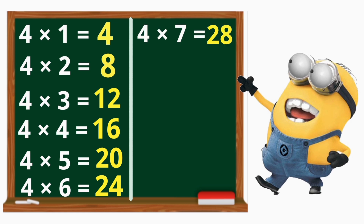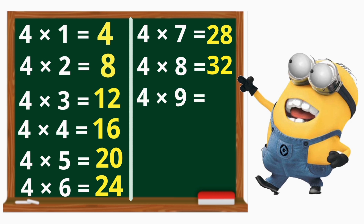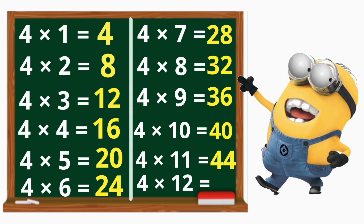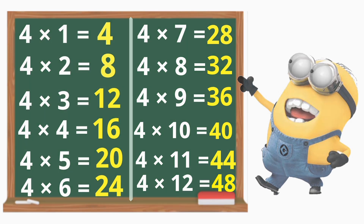4 x 8 is 32. 4 x 9 is 36. 4 x 10 is 40. 4 x 11 is 44. 4 x 12 is 48. This is the table of 4.